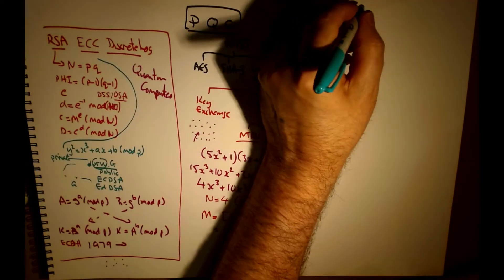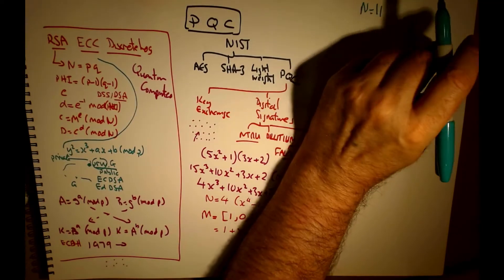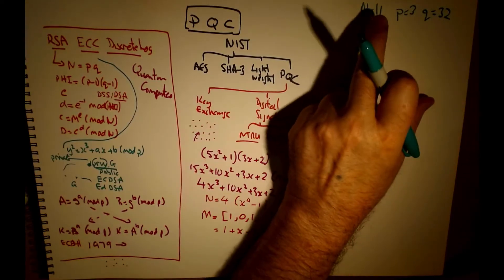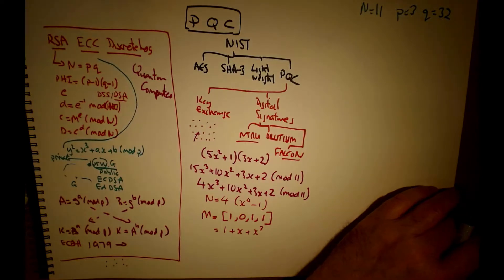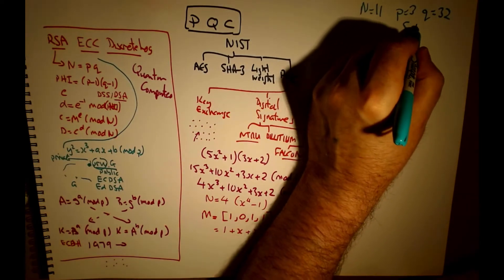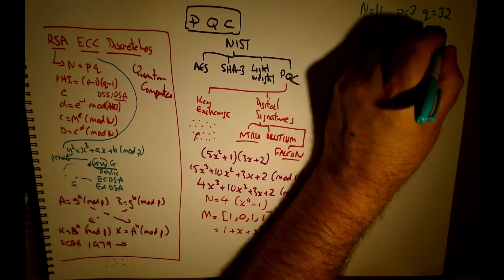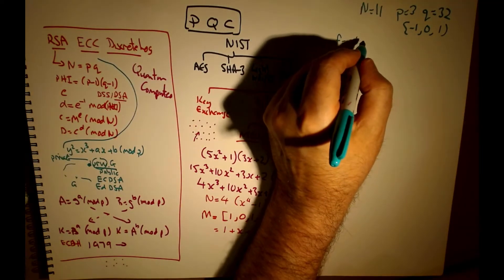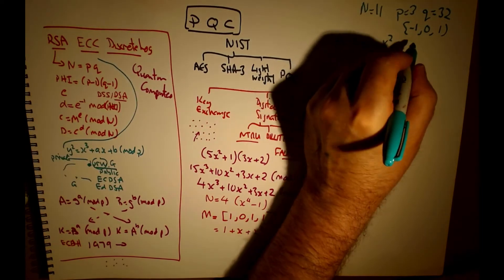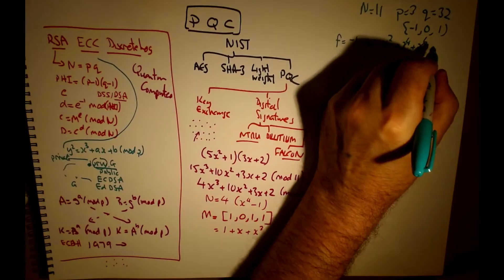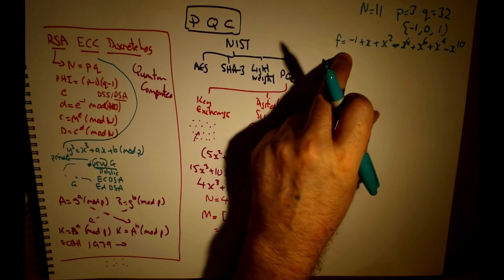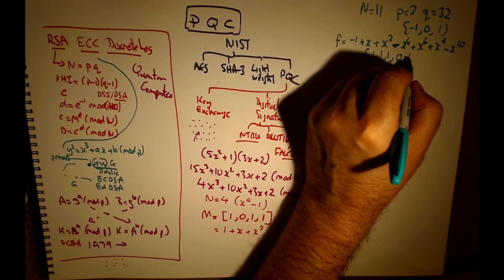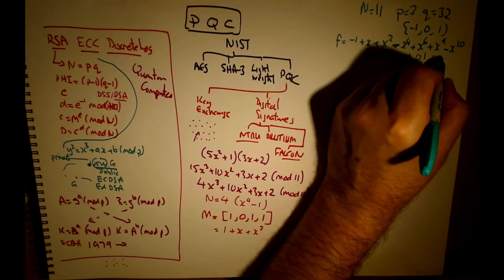Let's take an example, starting with a value of N equal to 11. We need a P value and a Q value — in this case P is 3 and Q is 32. We create two polynomials whose coefficients are -1, 0, or +1. Our first polynomial f is: minus 1 plus x plus x squared minus x squared minus x to the 4 plus x to the 6 plus x to the 9 minus x to the 10, which we can represent as the array: -1, 1, 1, 0, -1, 0, 1, 0, 0, 1, -1.